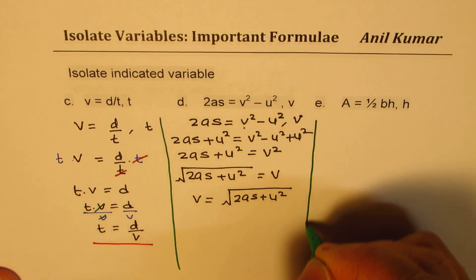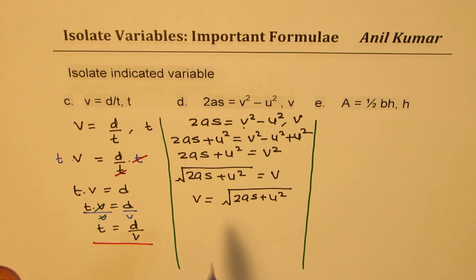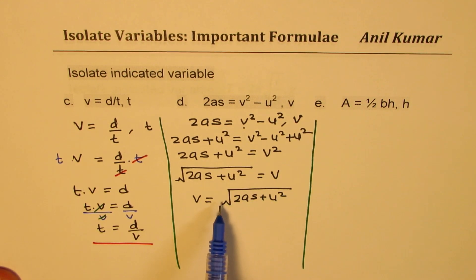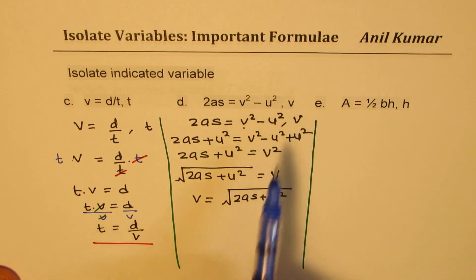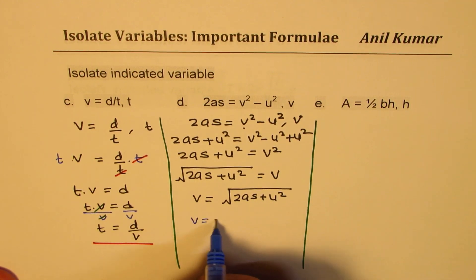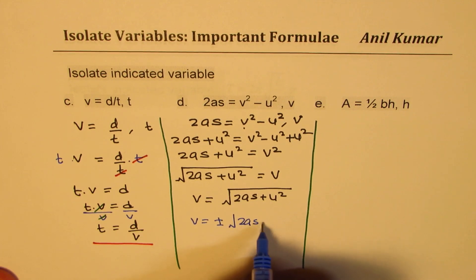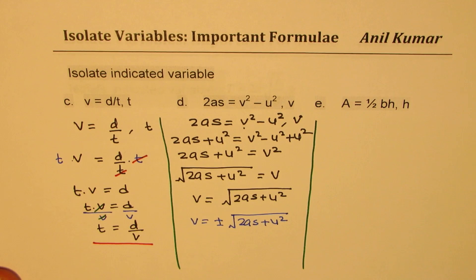Note that when you take a square root you should write plus and minus. We are assuming velocity is positive, but normally we should write v equals to plus or minus square root of 2as plus u squared. That is also the correct answer.